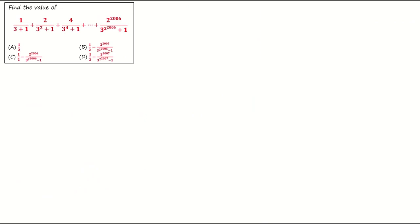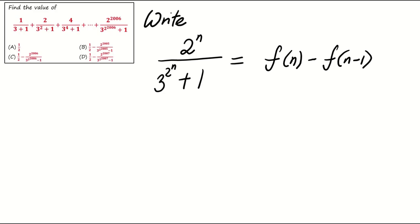The key to tackling a telescoping sum problem lies in expressing the general term, which is 2 to the power of n over 3 to the power of 2 to the power of n plus 1 in our case, as the difference between f(n) and f(n minus 1), or sometimes f(n) minus f(n plus 1). Our task is to find the function f(n).